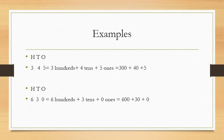Here, three is at hundreds place so there are three hundreds, four is at tens place so there are four tens, and five is at ones place so there are five ones. In expanded form you will write it as 300 + 40 + 5.